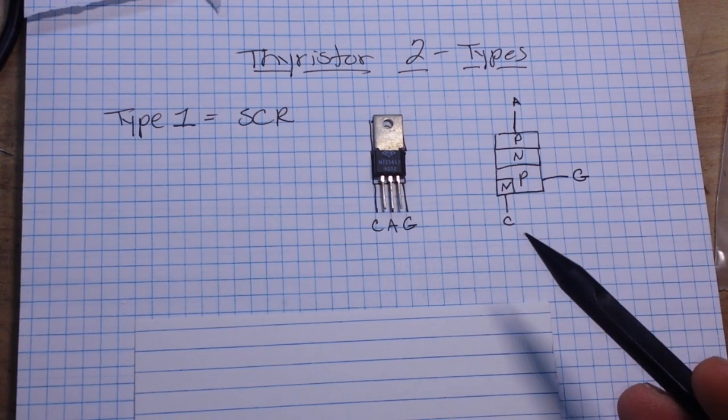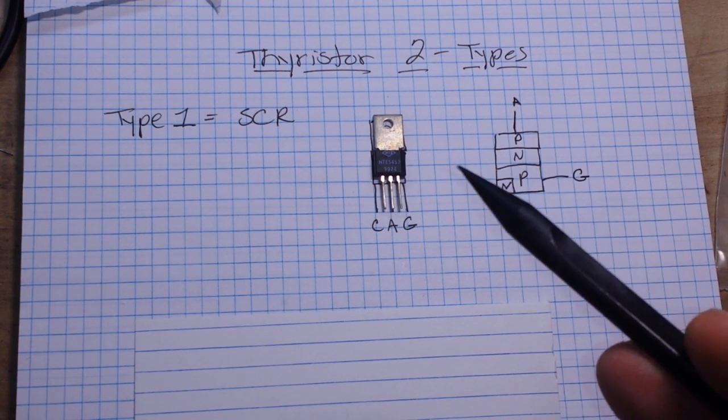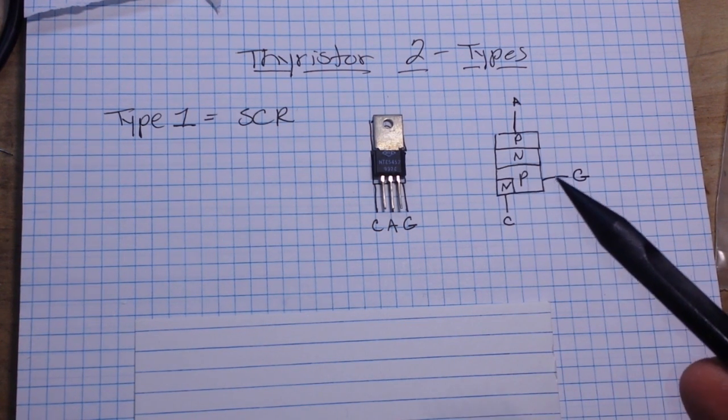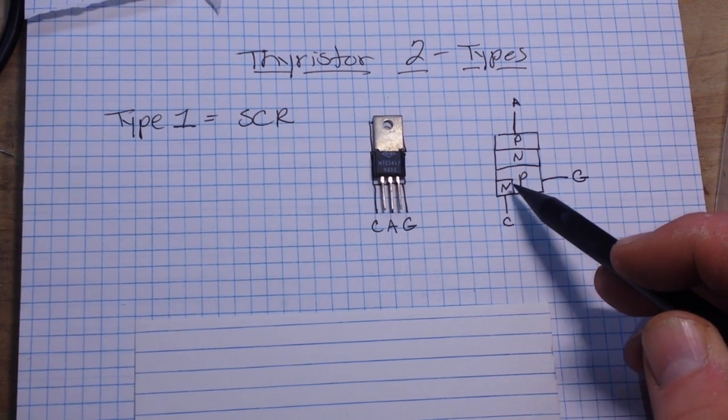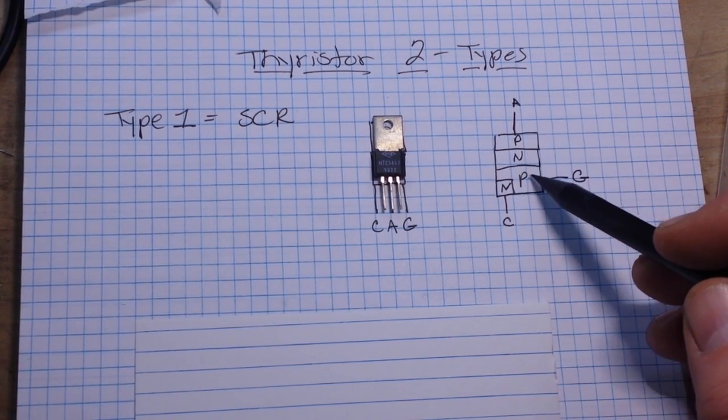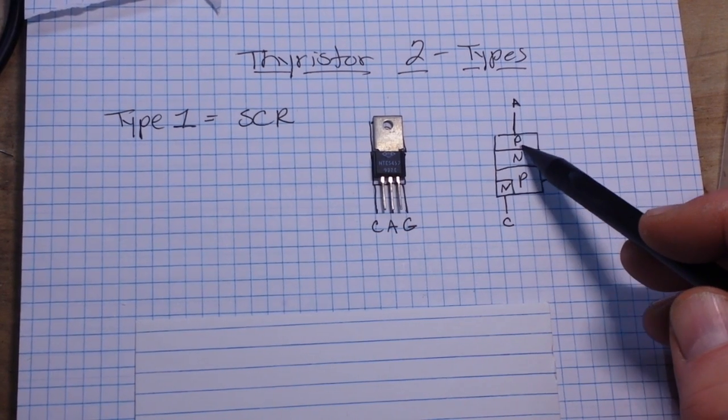All right, so silicon controlled rectifiers like I said are similar to a bipolar transistor, which as you remember has three layers, either NPN or PNP. But our SCR has an extra layer. So here you see P, N, and P layers. We have our anode going to the P layer.